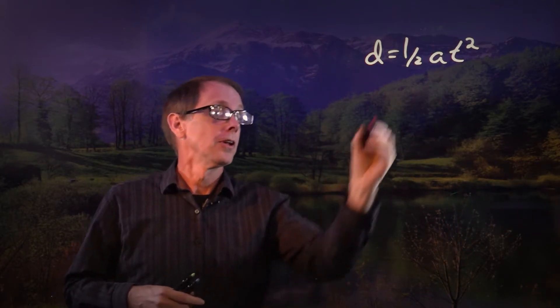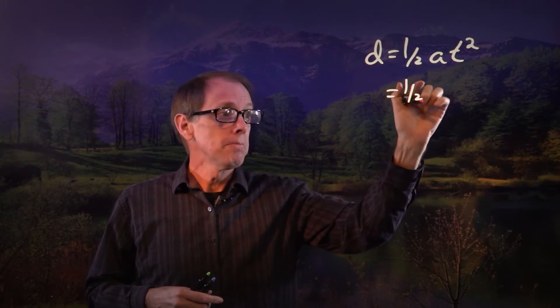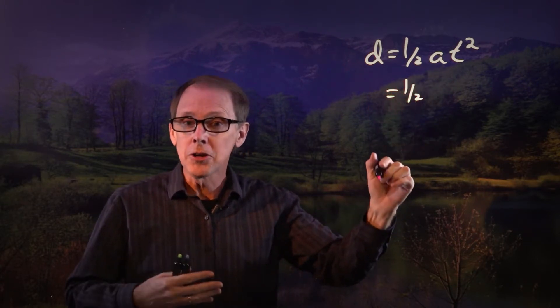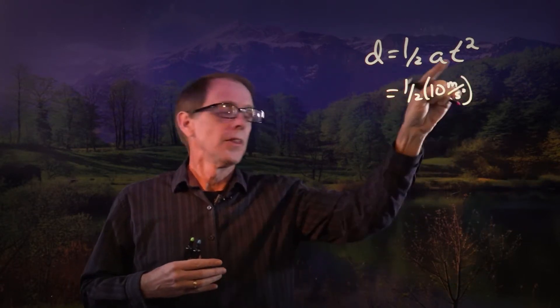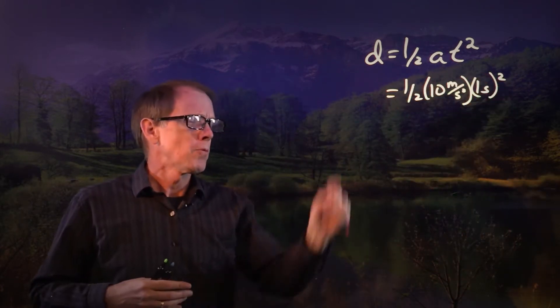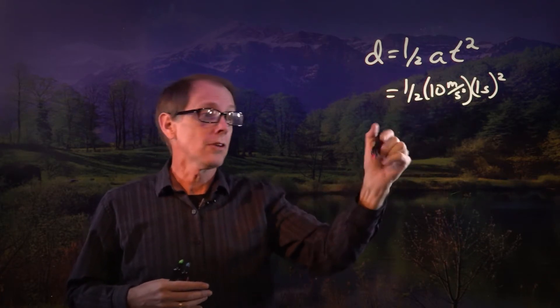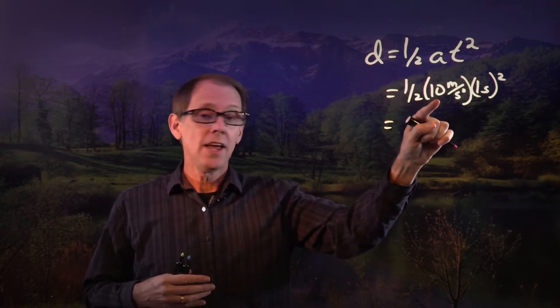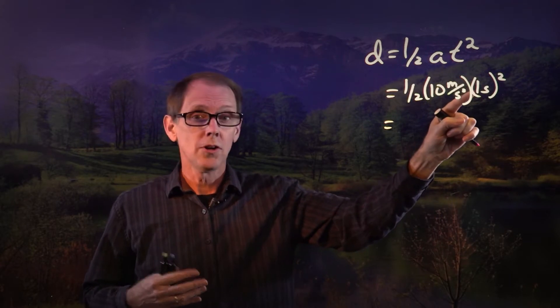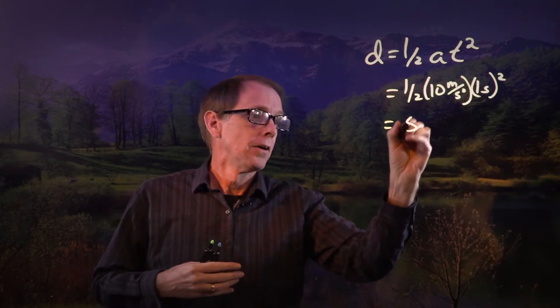We can do this. The acceleration due to gravity, we'll round it up to 10 meters per second squared. The time we're looking for is one second. If we want to calculate how far it falls in one second: one-half times ten, which is five, times one, times one — is five. Five what? Five meters.